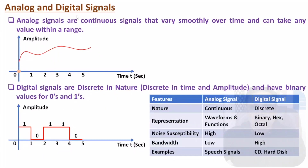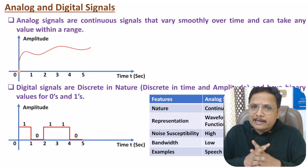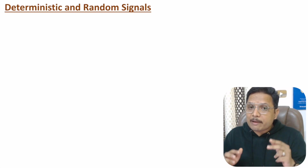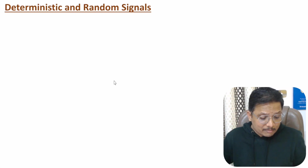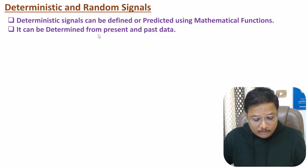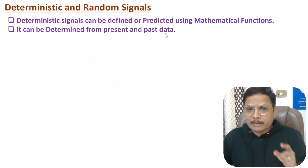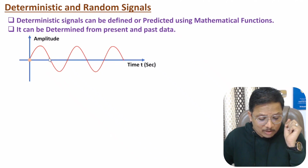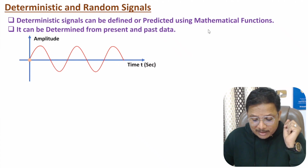Now I will discuss about random signals and deterministic signals. Deterministic signals can be defined by mathematical functions — they can be defined or predicted using mathematical functions, and can be determined from present and past data. For example, a sine signal: we have the mathematical function sine(ωt), and one can predict the data at any given interval using this function. This is a deterministic signal.